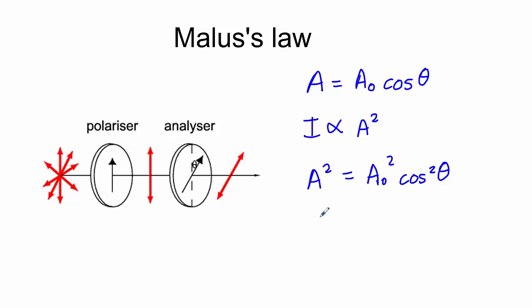And we can replace our A squared with I, and our A naught squared with I0, which will represent the initial intensity of the light, and we need to keep cos squared theta here. So this is Malus's law.